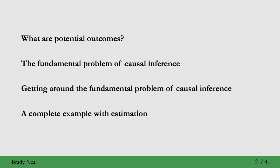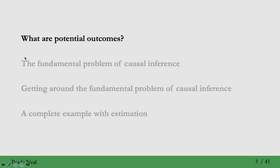Here's the outline. We'll start with what are potential outcomes, then cover the fundamental problem of causal inference, and talk about how to get around that fundamental problem. We'll finish with a complete example where we actually estimate specific numbers for causal effects. This is a lot of material, so it will be broken up into a bunch of different small videos, but it's all one lecture in 41 slides.